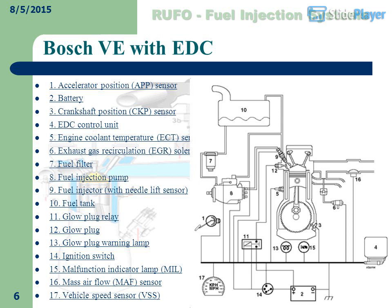The main system components include: Battery, Crankshaft Position (CKP) Sensor, EDC Control Unit, Engine Coolant Temperature (ECT) Sensor, Exhaust Gas Recirculation (EGR) Solenoid, Fuel Filter, Fuel Injection Pump, Fuel Injector, Fuel Tank, Glow Plug Relay, Glow Plug, Glow Plug Warning Lamp, Ignition Switch, Malfunction Indicator Lamp (MIL), Mass Airflow (MAF) Sensor, and Vehicle Speed Sensor.